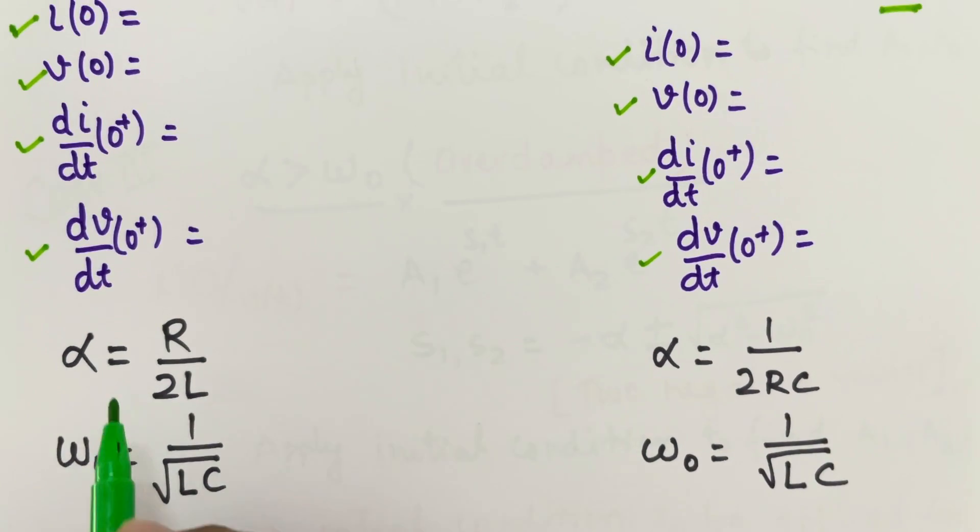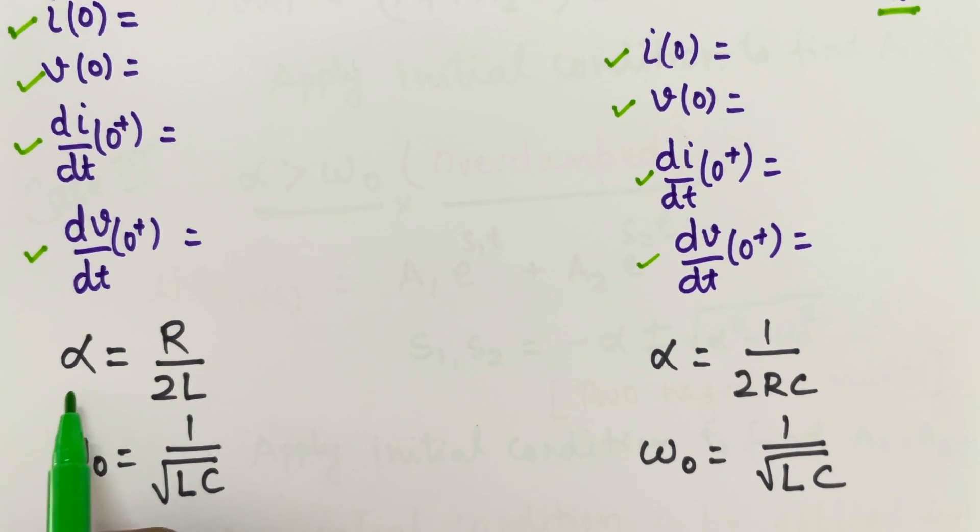Then next is alpha. Alpha is R by 2L for the series RLC circuit. So this thing is for series RLC circuit. Omega naught is 1 by root LC which is same for parallel RLC also. Only alpha value will change for the parallel RLC case which is 1 by 2RC.